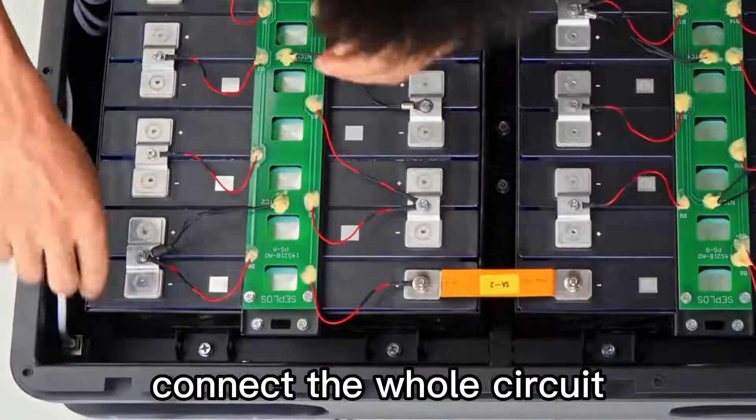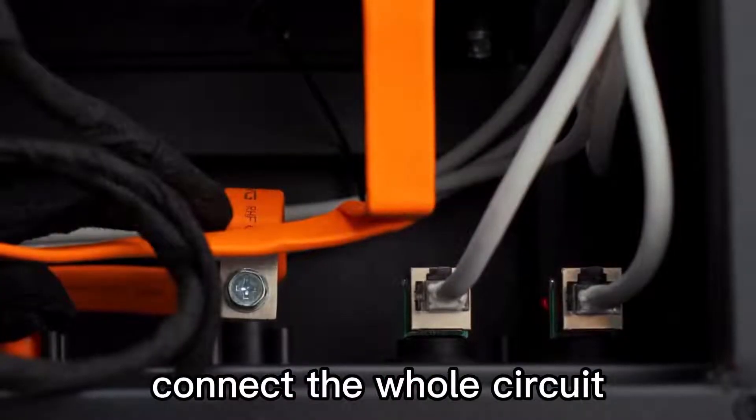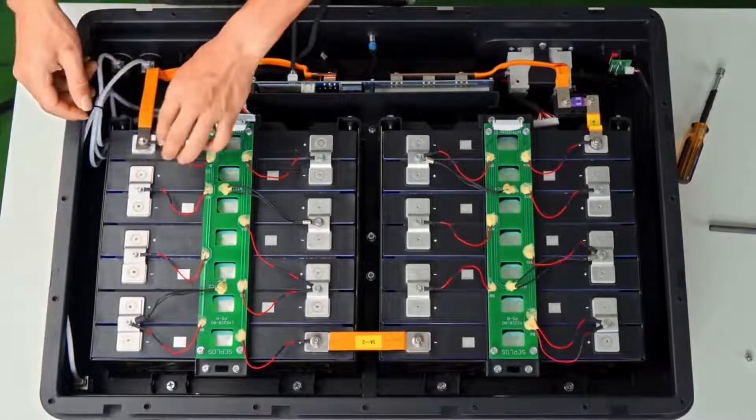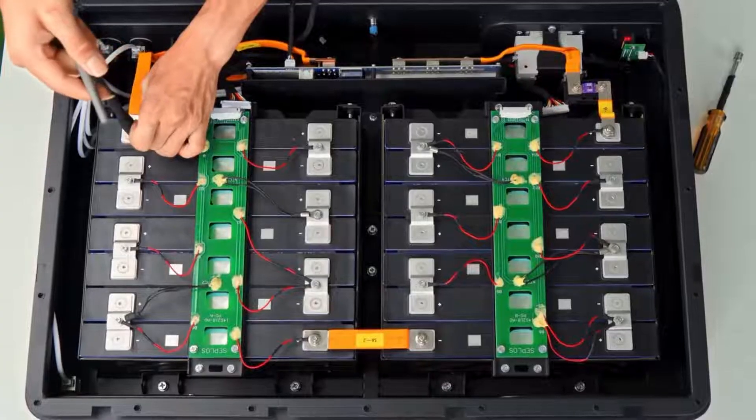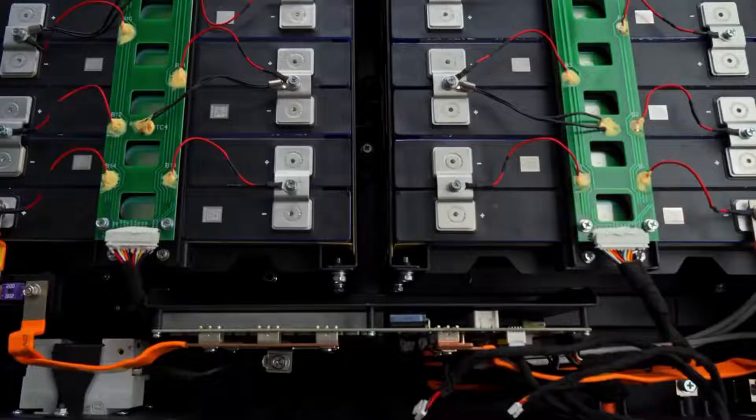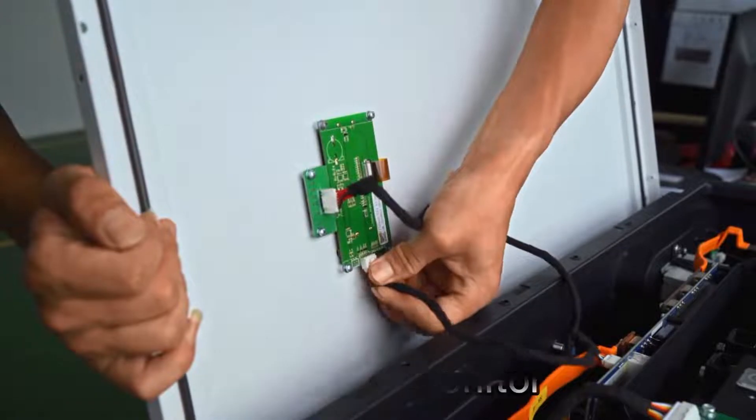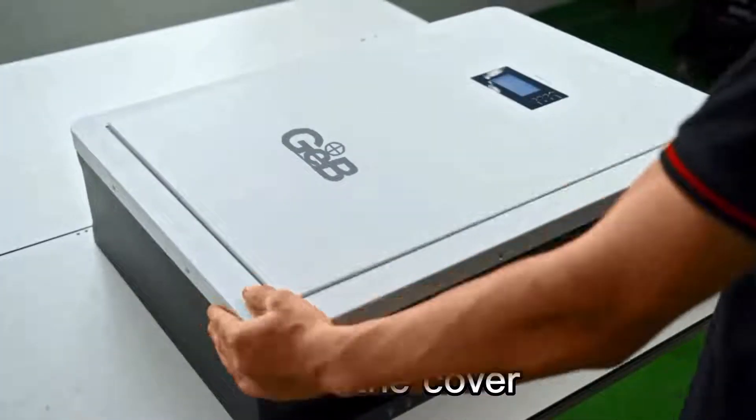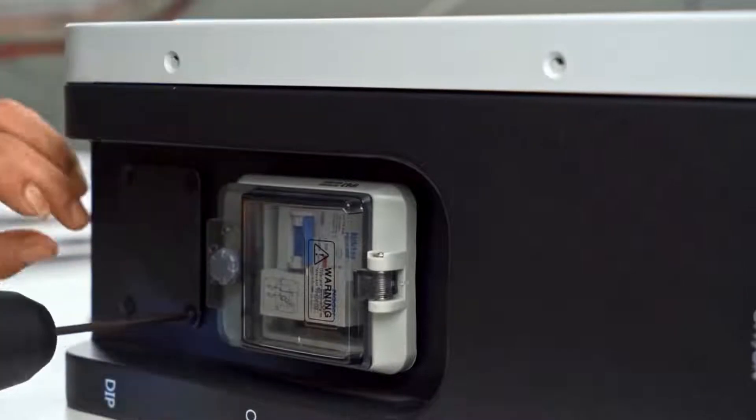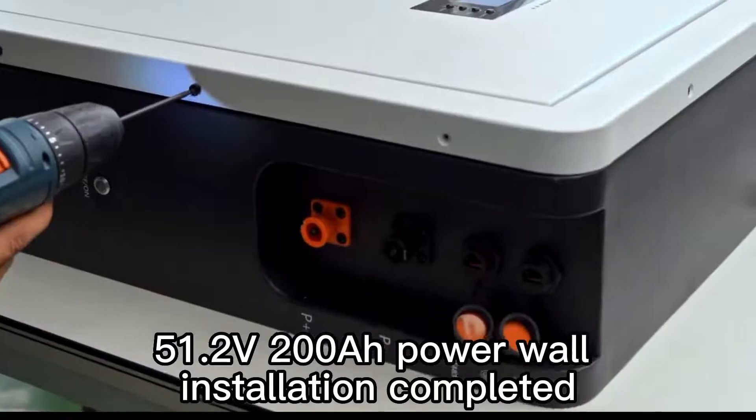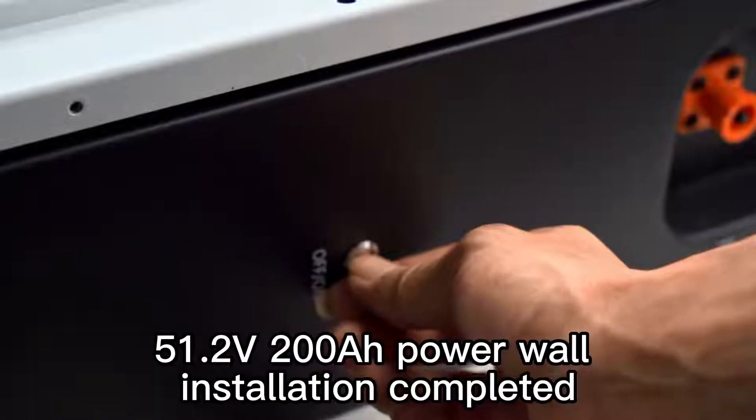Connect the whole circuit. Install the cover. 51.2V 200Ah power wall installation completed.